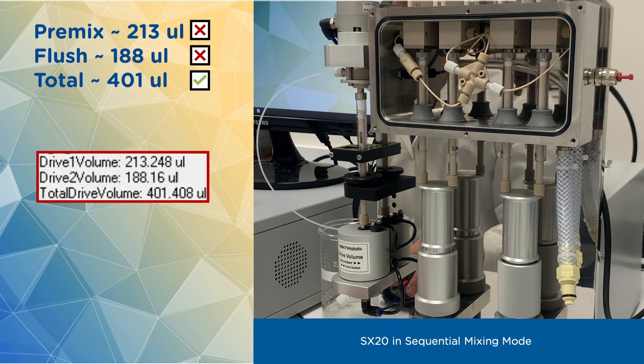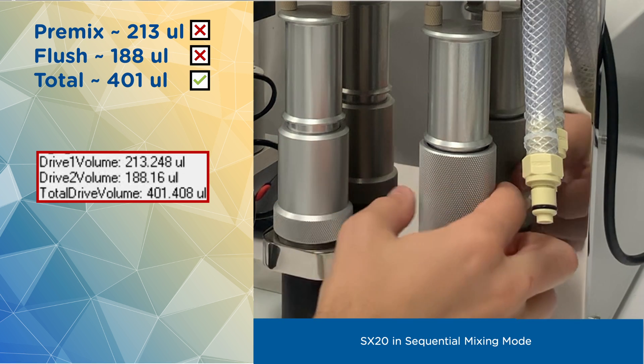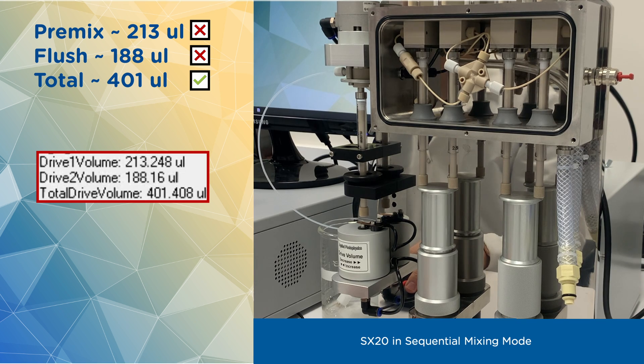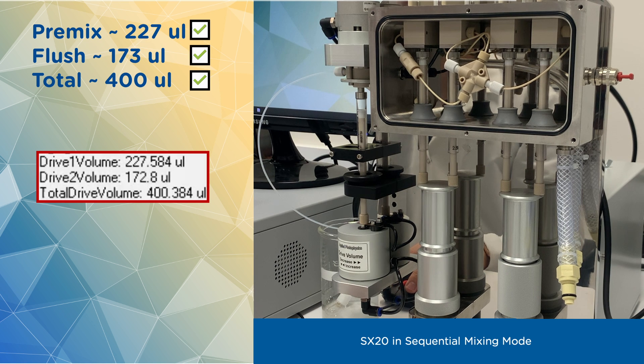After adjusting total volume, I am going to adjust drive 1 volume to bring it closer to 220. Direction of adjustment is the same. After adjusting, repeat the run and look at drive profiles. If they are correct, you can proceed with performing sequential mixing experiments.